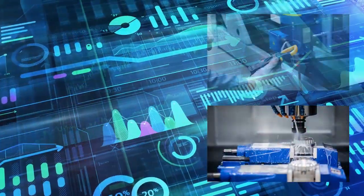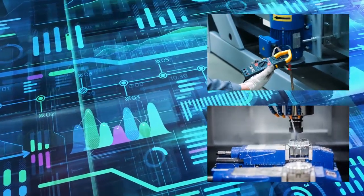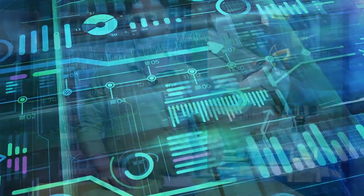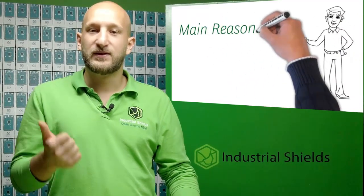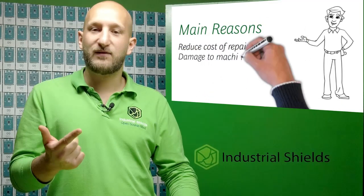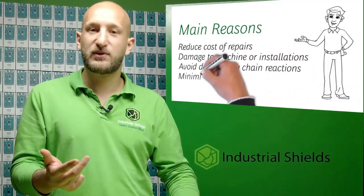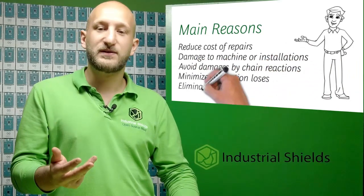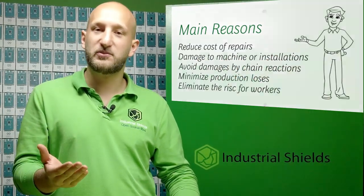This system is the best in terms of reliability because it allows us to know with certainty that an element must be replaced. The main reasons the industrial sector depends on preventive maintenance are: to considerably reduce the cost of repairs, avoid damage to machines or facilities in the event of a chain reaction caused by a fault, minimize production losses, and delimit the risk for people.